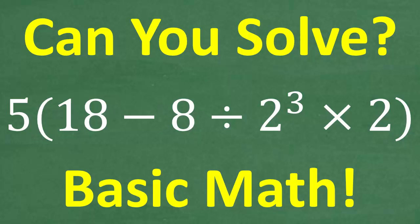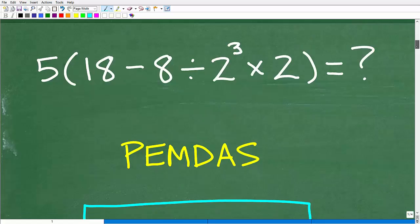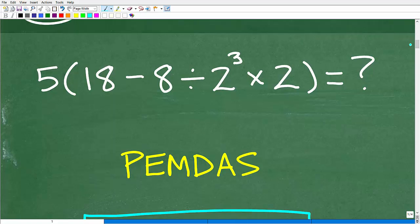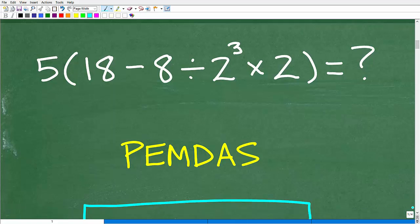So with all that out of the way, let's go ahead and get into the actual problem. As I indicated, what we have to be thinking about here is the order of operations. And when we're thinking about the order of operations, we want to think about this acronym: P-E-M-D-A-S, also known as PEMDAS. I'll explain this here in a second.